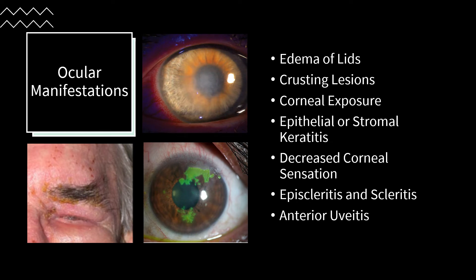Common ocular manifestations of herpes zoster include swelling of the lids, epithelial or stromal keratitis, decreased corneal sensation, episcleritis and scleritis, and anterior uveitis. Other symptoms include Bell's palsy leading to inadequate lid closure, and vesicles on the tip of the nose indicating involvement of the nasociliary nerve. A Hutchinson sign is a herpetic lesion at the tip or side of the nose with extension to the corner of the eye, and is a strong predictive factor indicating ocular involvement in more than half of patients with herpes zoster.